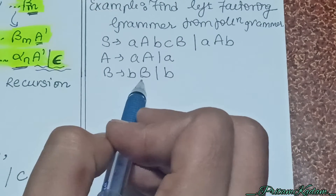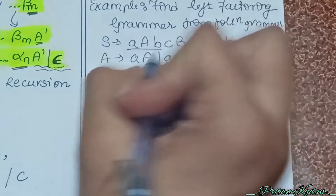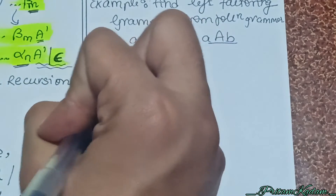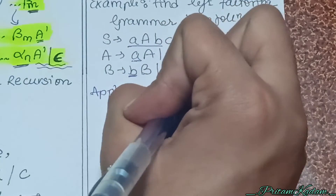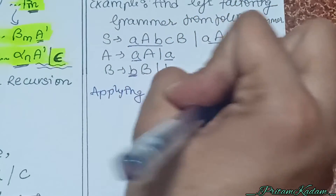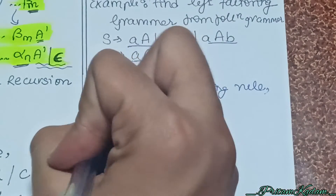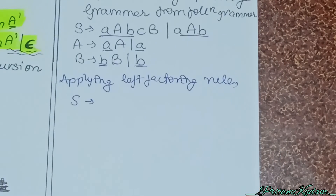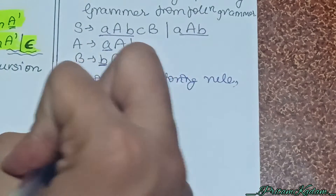Now let us see the example for left factoring. From the grammar S → aAbc B | aAb, we have a common part — I have underlined those. Applying the left factoring rule, I write the common factor first: aAb, then S', and S' contains the remaining parts.